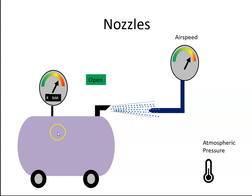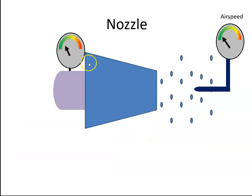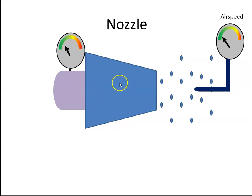As the air leaves the vessel, the pressure will drop and we can imagine the velocity of the air decreasing as well. The same thing happens with a nozzle — if we have air entering at a particular low pressure, we can expect a low velocity at the exit.